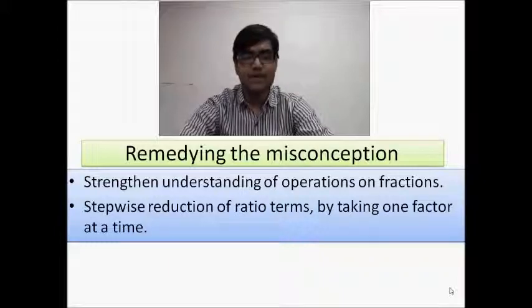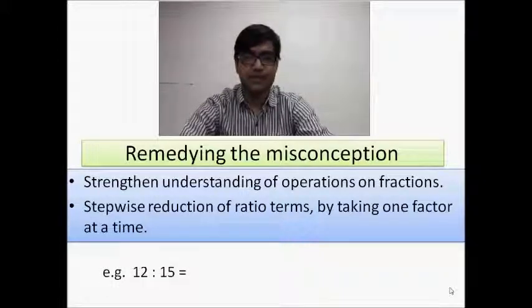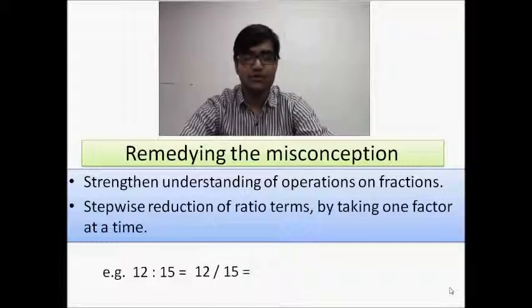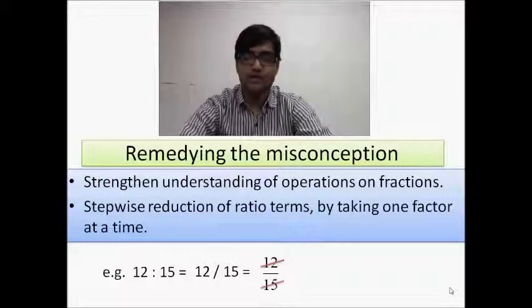We can tell the students to expand each term into its prime factors and remove the common factors. In the example below, we have taken 12 is to 15 as a ratio. We write it in fraction form and list out the prime factors. Then we see that 3 is common between them and remove it. Thus we get the answer 4 is to 5.